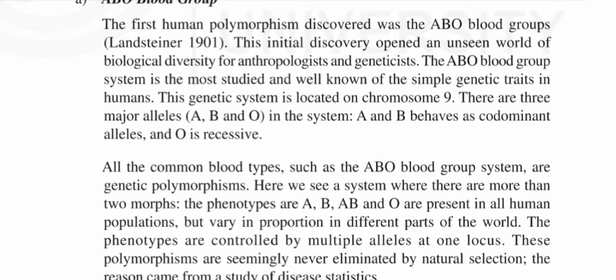The genetic system is located on chromosome 9. There are three major alleles: A, B, and O in the system. A and B behave as co-dominant alleles, and O is recessive. All the common blood types such as the ABO blood group system are genetic polymorphisms — a system where there are more than two morphs.